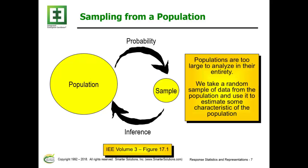We often cannot examine the full population, so we take a sample. It's important to understand that the sample needs to represent the population of interest. For example, if we take 200 parts all manufactured in one day, that doesn't represent the data variability you might have in a particular process.